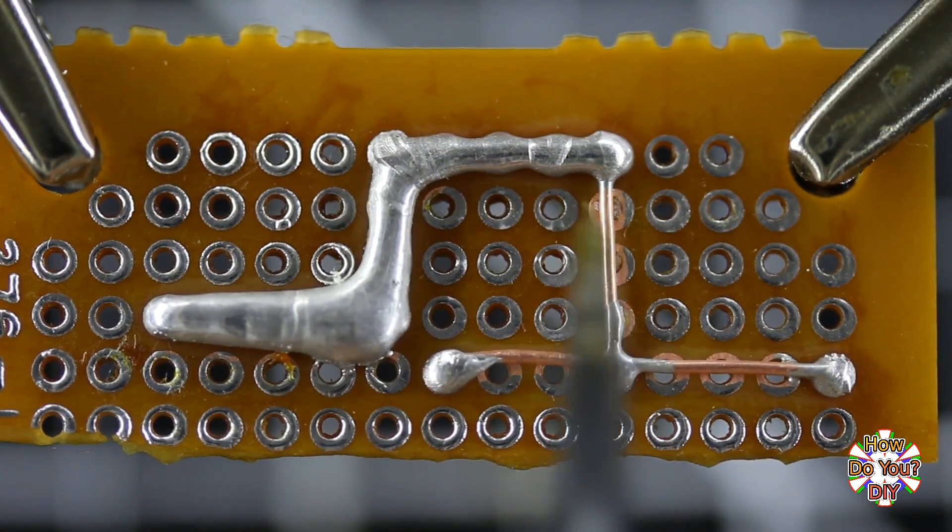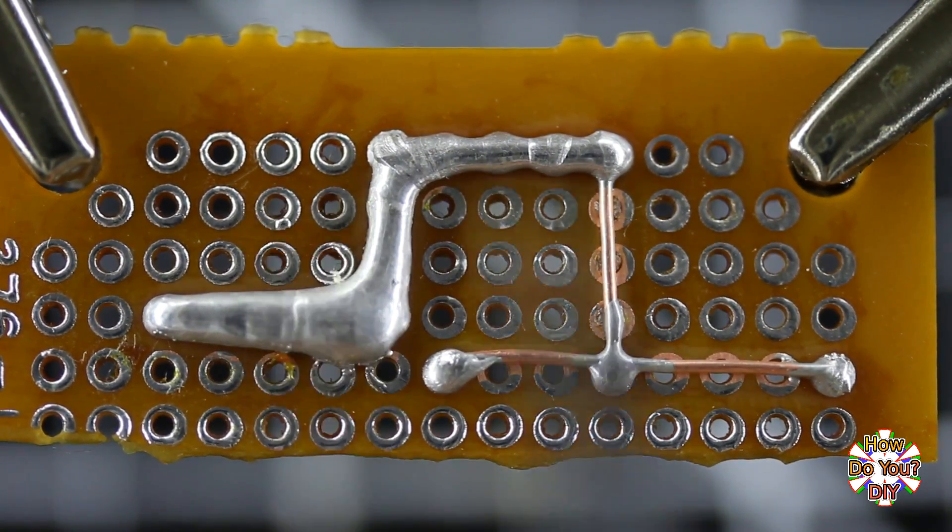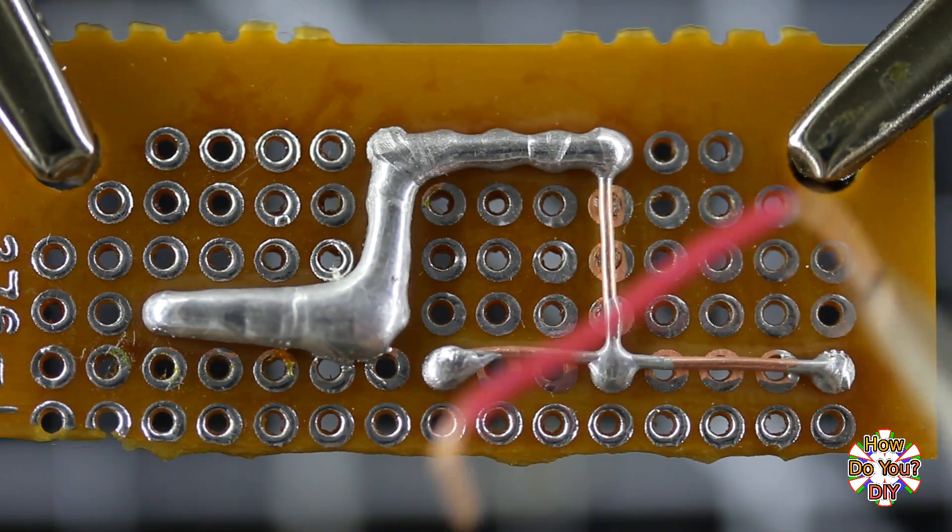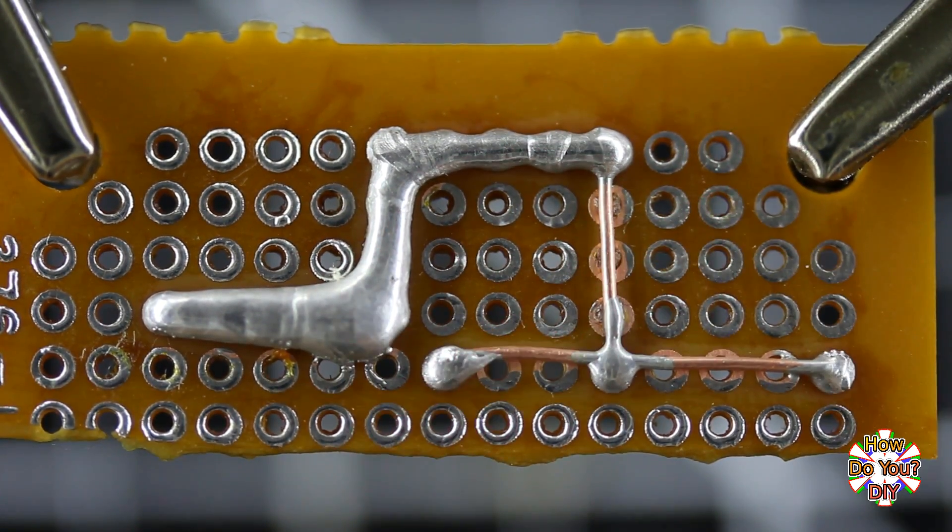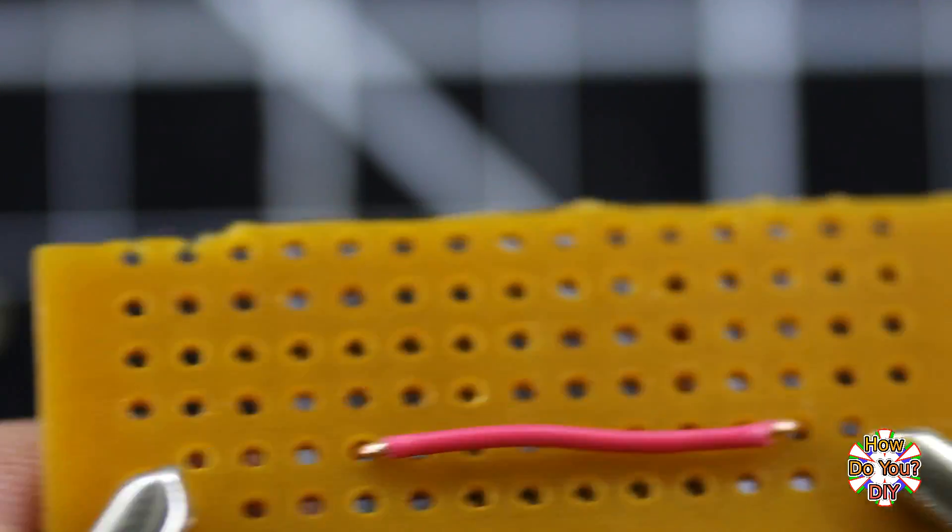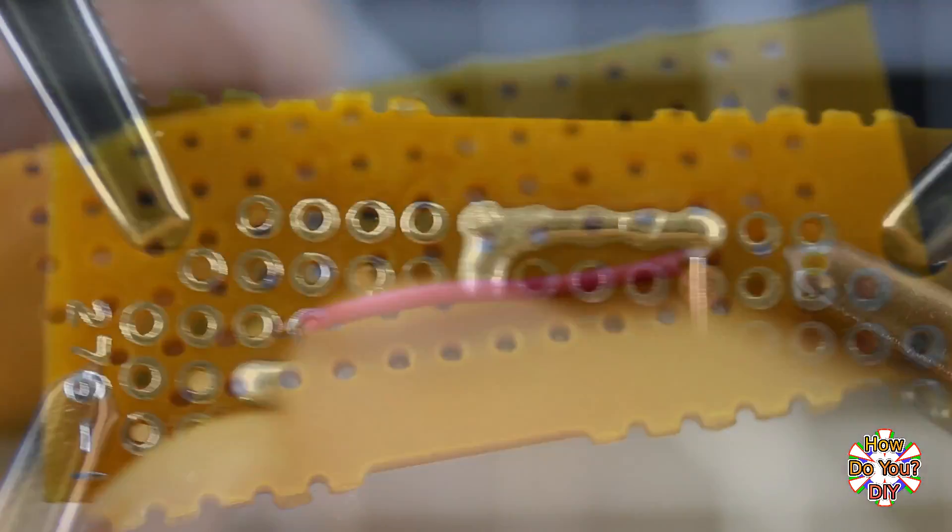Sometimes you'll need to cross over your existing paths, but you don't want to connect to them. You'll need to add a jumper wire to do this. You can add the jumper wire to either side of the board. Just make sure that the wire is insulated from the others.